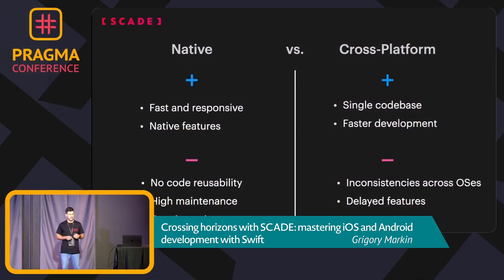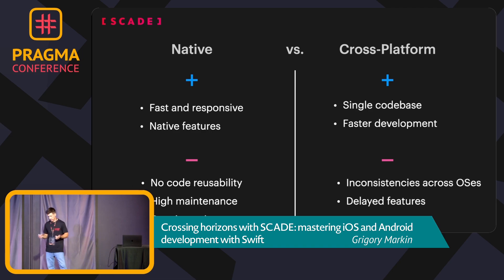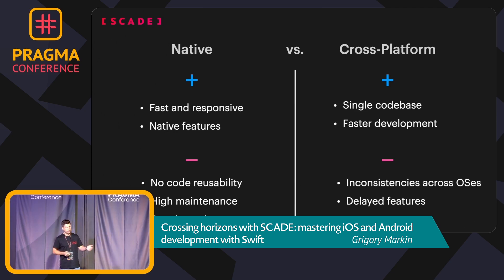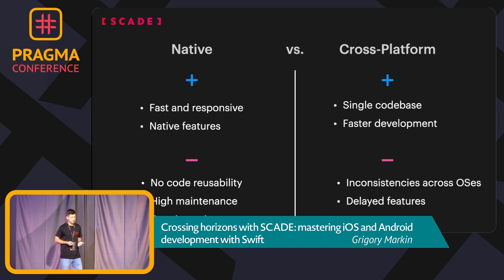We have advantages and disadvantages between these two approaches. If you build a native application, you get a fast and responsive application with native features available on a particular platform. But there is also a problem: if you need to build two applications, you cannot share code because on Android we have one programming language and on iOS another. That's why we have higher maintenance — we have to support both applications, and it's cost-intensive.